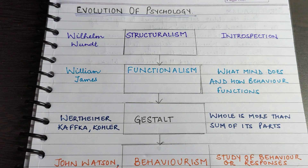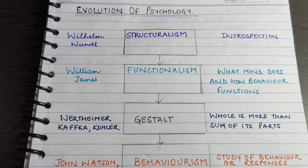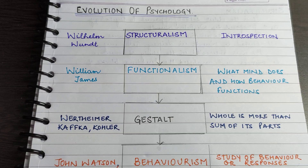Coming to the next school of thought, which is gestalt psychology. Gestalt psychology had thinkers like Wertheimer, Koffka, and Kohler. It was founded in Germany by these psychologists who were known as gestalt psychologists. It says the whole is more than the sum of its parts. When we look at the world, the organization of what we see is called perceptual organization. They also demonstrated the laws of perceptual organization. The organization of what we see is viewed as a whole and not as the sum of its parts.